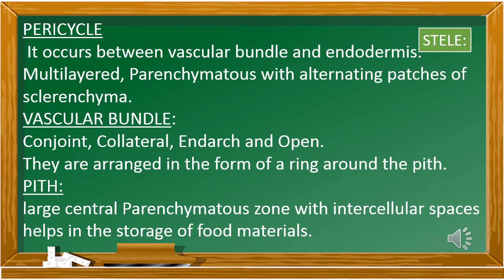Next is the vascular bundle. We define the xylem and phloem in this region by four terms: conjoined, collateral, end-arch, and open. Conjoined means xylem and phloem lie on the same radius. In the root, xylem and phloem lie on different radii, but here they lie on the same radius, so we term it conjoined. Collateral means xylem lies towards the center and phloem towards the periphery.